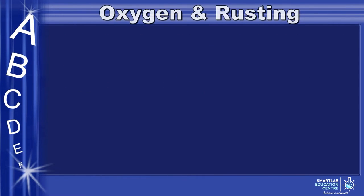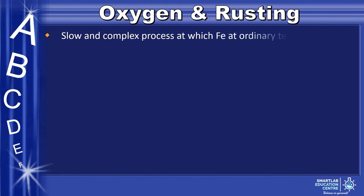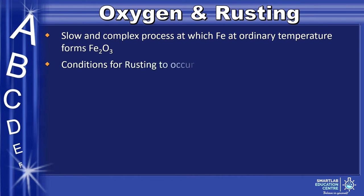Next, let's look at rusting. It is a slow and complex process where iron at normal temperature forms Fe₂O₃. The conditions for rusting to occur are that oxygen must be present and water must be present as well.